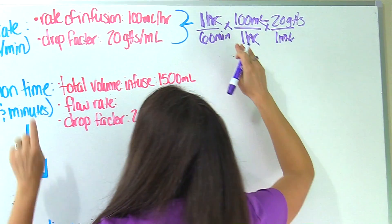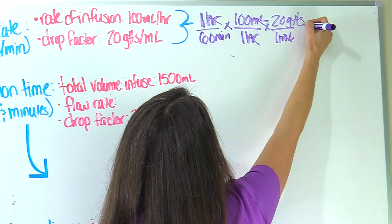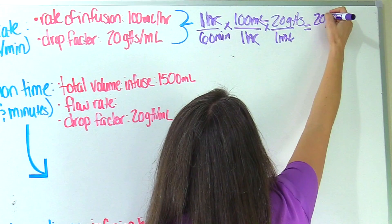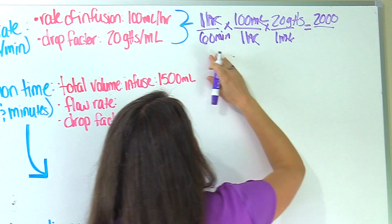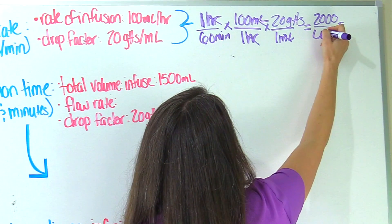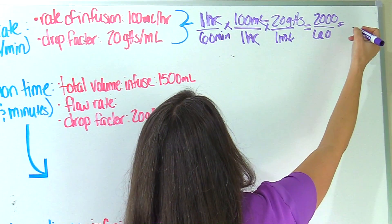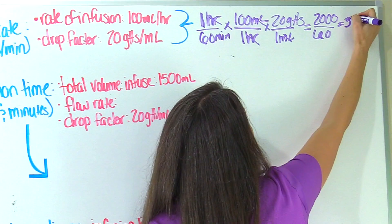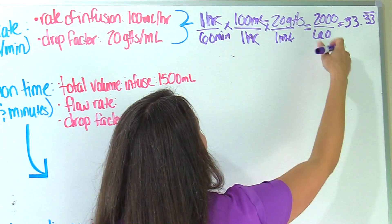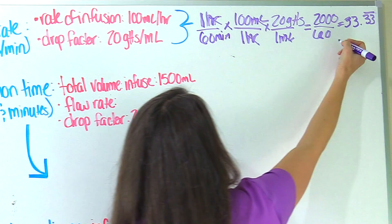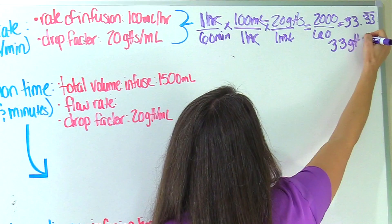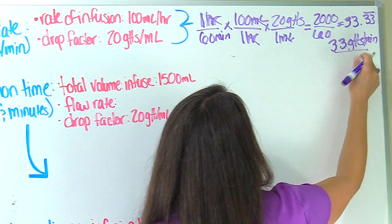Now we're just left with drops per minute — that's where we need to get, so we're ready to solve. We multiply everything at the top, we get 2000. We multiply everything at the bottom, that gives us 60. Then we divide: 2000 divided by 60 is 33.33 repeating. We round to the nearest whole number, so that rounds to 33 drops per minute. That is our IV flow rate.